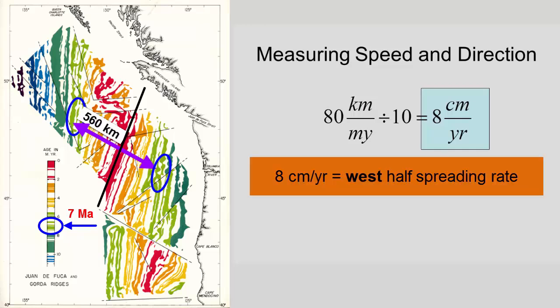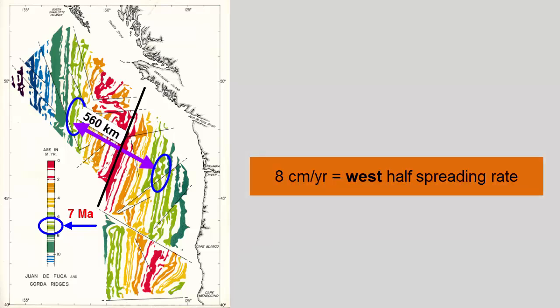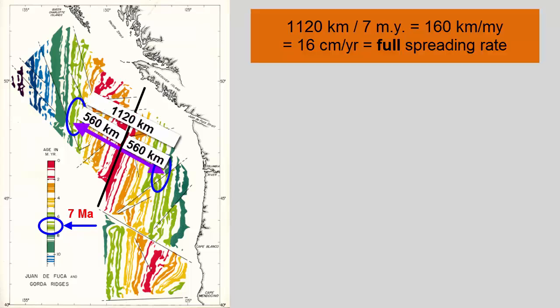We call that a half-spreading rate, by the way, because it represents how fast one half of the rift is spreading, or how fast the western side is moving away from the center. If we want to know the full spreading rate and how fast both sides are moving away from each other, the distance is doubled, and we get 16 centimeters per year.